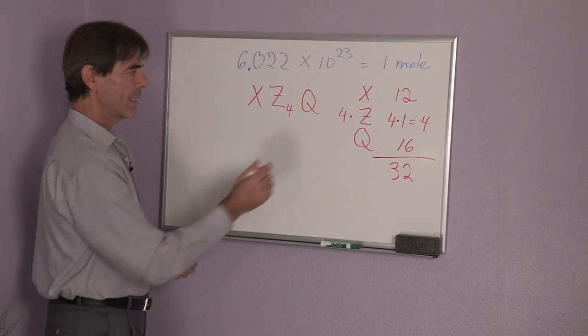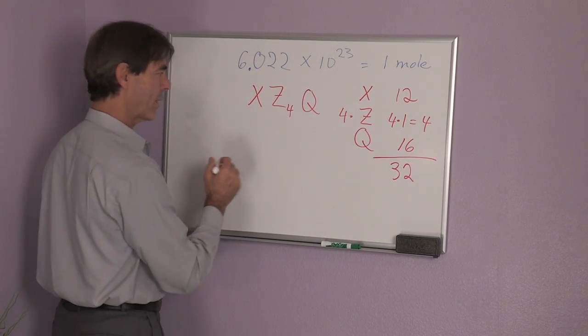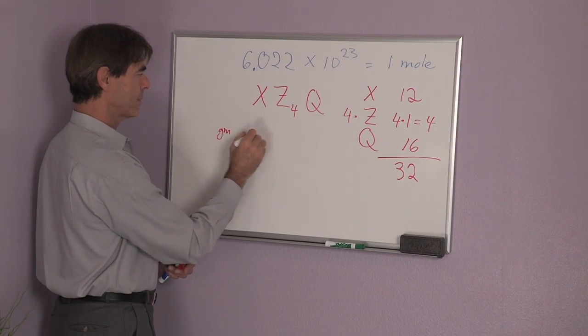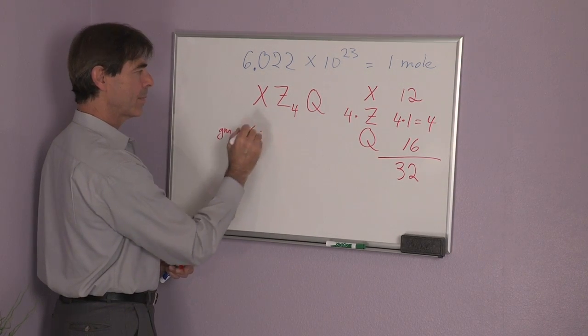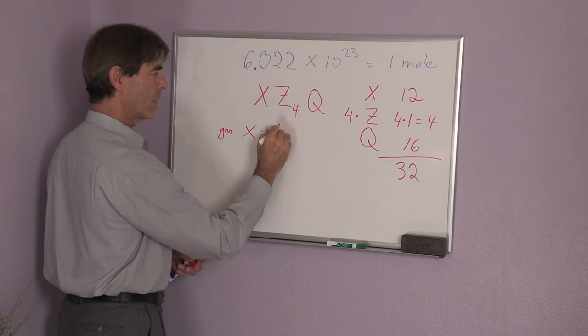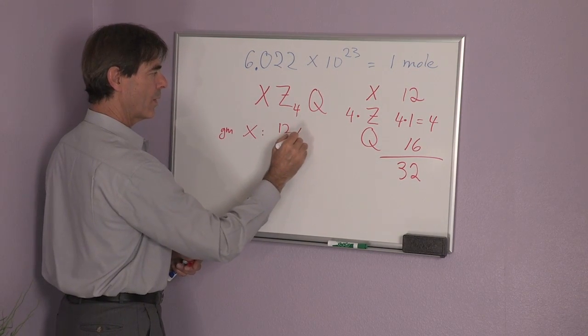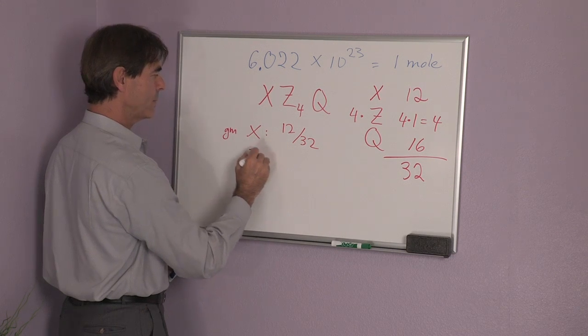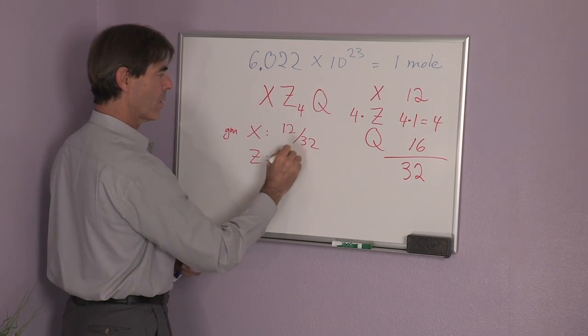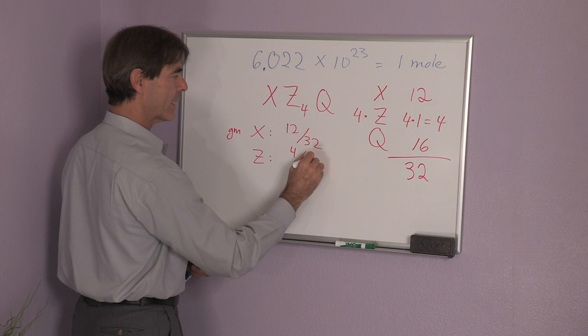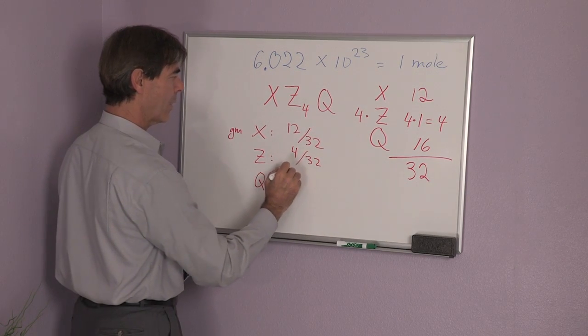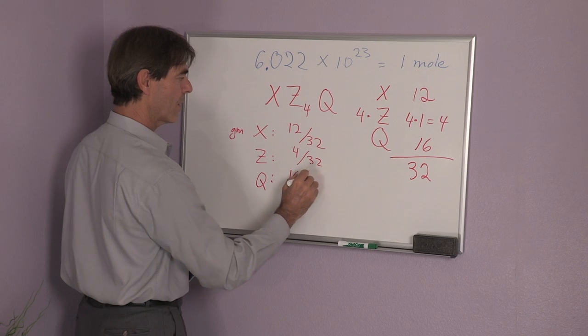And so now I can work out the gram fraction of X is 12/32, of Z is 4/32, and of Q, I would have 16/32.